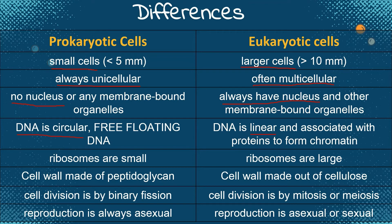Prokaryotic cells have smaller ribosomes, but eukaryotic cells have larger ribosomes. For prokaryotic cells, their cell walls are made of peptidoglycan, but the cell walls of eukaryotic cells are made of cellulose. When it comes to cell division, prokaryotic cells divide by binary fission, while eukaryotic cells divide by mitosis or meiosis. Reproduction for prokaryotic cells is always asexual, but for eukaryotic cells it can be either asexual or sexual.